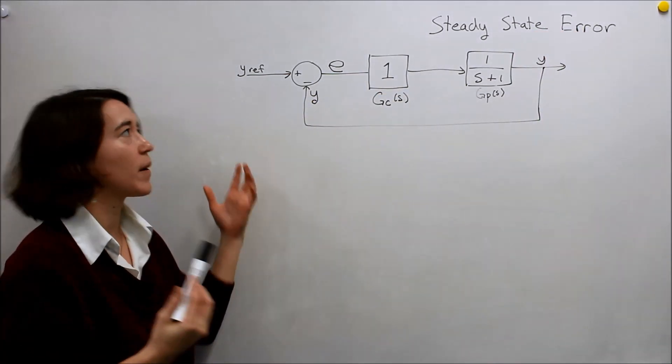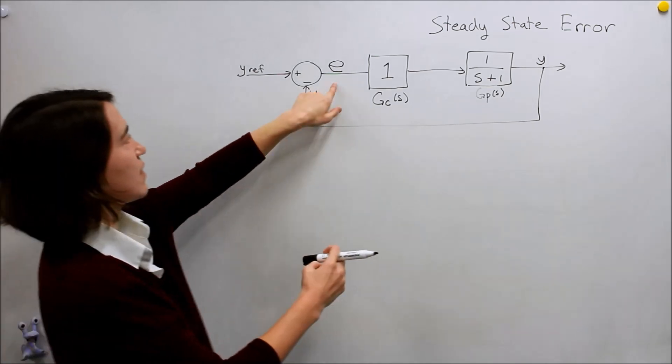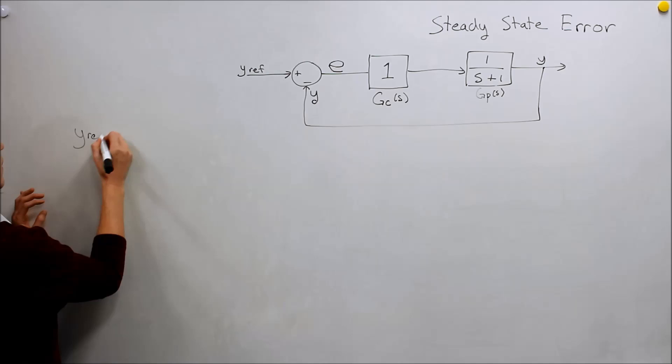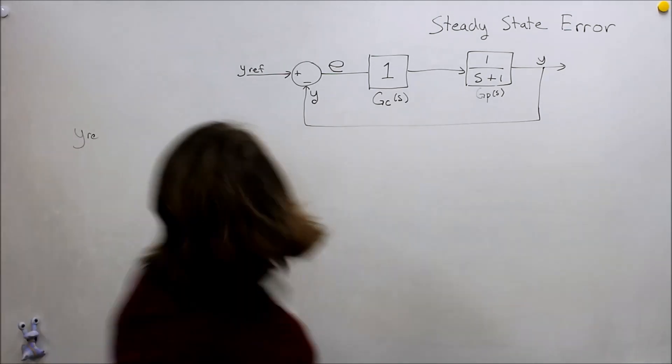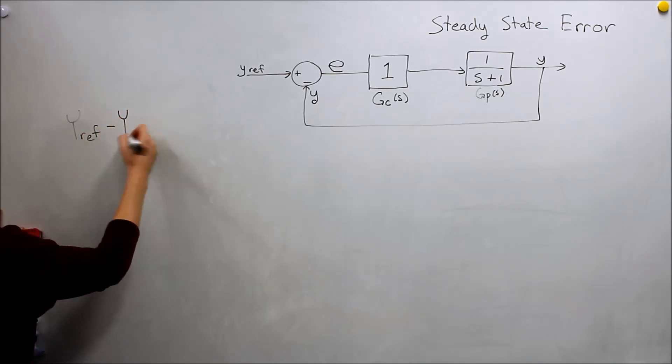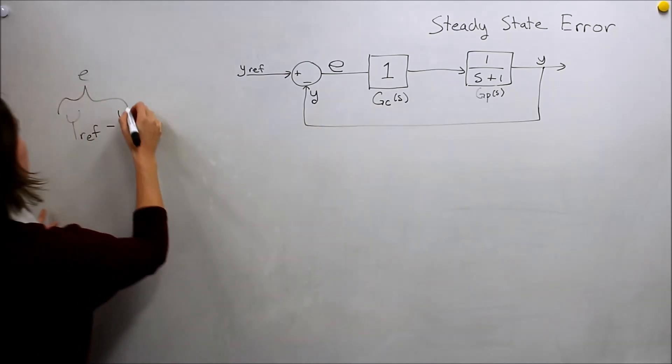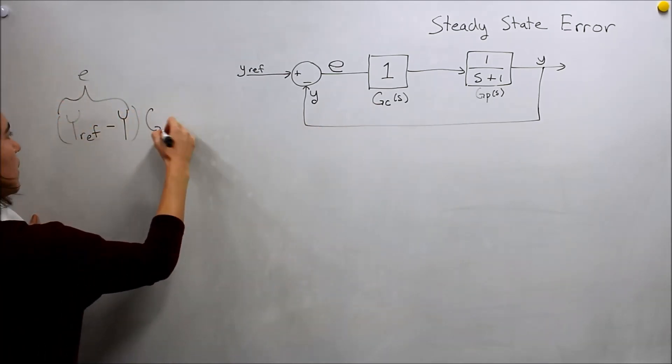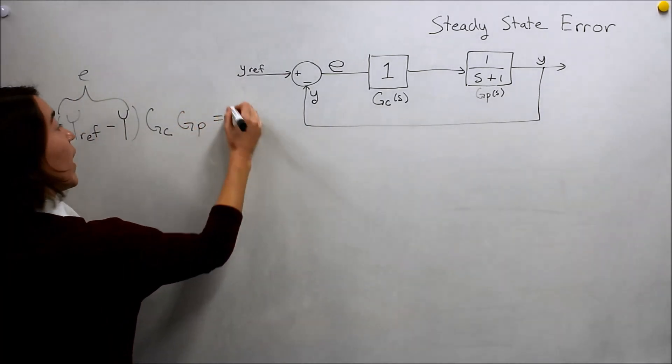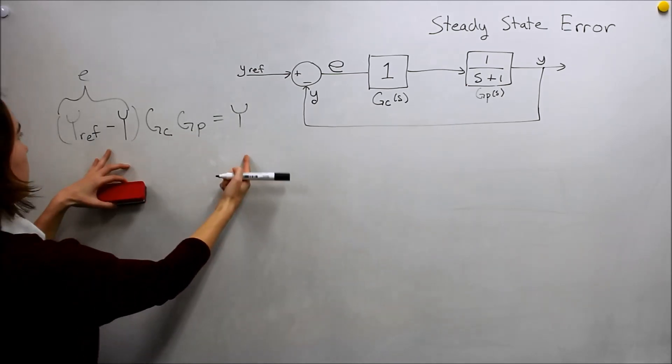To do that, let's think about what the basic equation for this feedback loop is. If we start at this point e, our error, we know is equal to y_ref, and we're going to be in the Laplace domain, so capital Y_ref minus y. That's our e. If we take that and multiply it by gc and then multiply it by gp, we get y out again. This is our feedback loop—the input depends on the output. This is our basic equation.